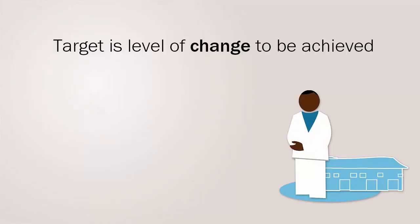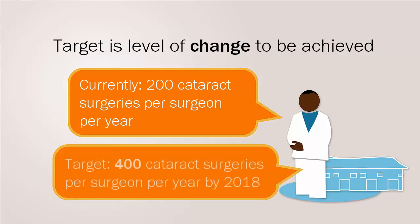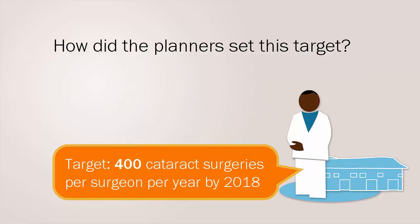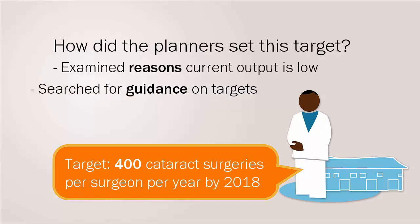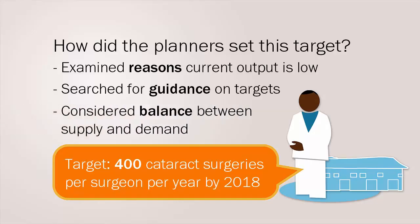A target is the level of change that should be achieved in each objective over the agreed period of time. Target setting needs to be carefully considered. For example, the number of cataract surgeries per surgeon in a hospital is 200 per year at present, and the plan is to reach a target of 400 per year by 2018. To set this target, planners first examined the reasons why the present output is low, then searched for guidance from national and regional plans on expected targets for cataract surgery rates, and finally considered the balance between supply of and demand for services in their population.